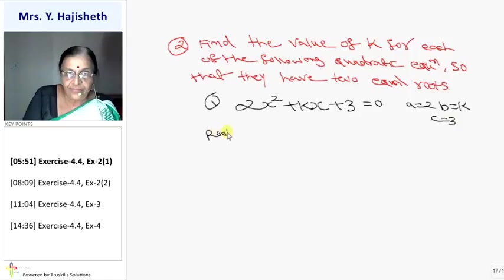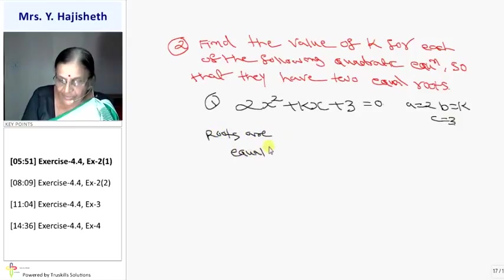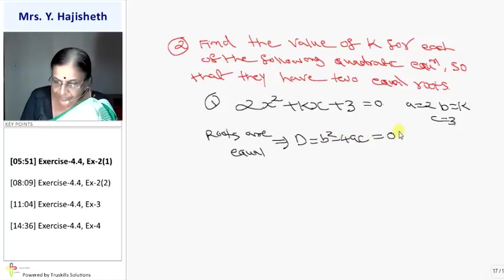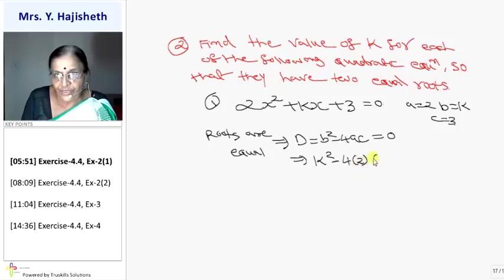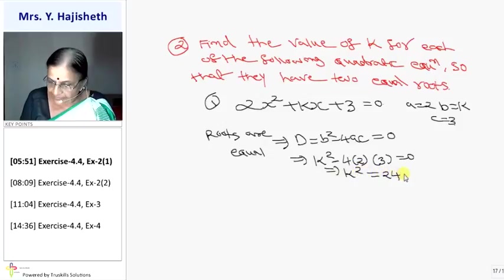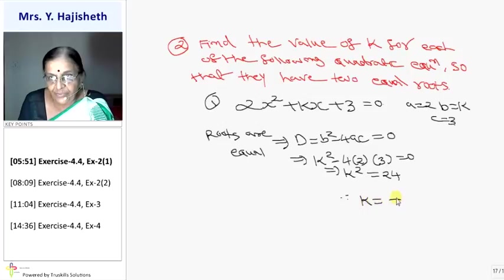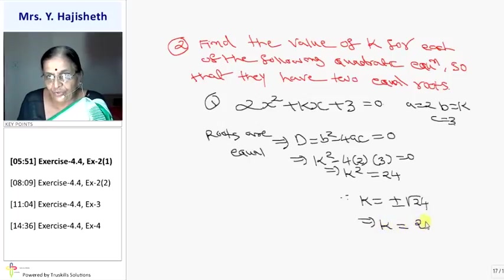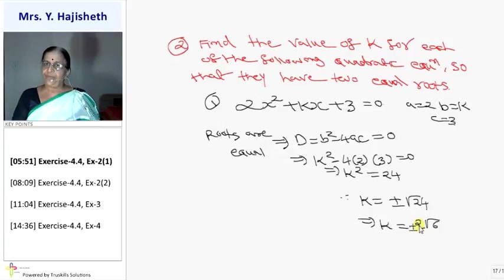Since roots are equal, D = B² − 4AC must be 0. That implies K² − 4×2×3 = 0. So K² = 24. Therefore K = ±√24 = ±2√6. When K is ±2√6, my roots are equal.